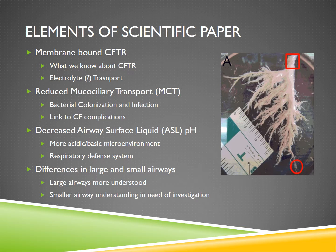The paper also discussed how defects in CFTR lead to decreased airway surface liquid pH. If the microenvironment is more acidic or basic around these lung epithelial cells, the onset of cystic fibrosis is affected. This airway surface liquid is essential for our respiratory defense system, and there are key differences in the large and small airways. The large airways are more understood and more commonly studied, while the smaller airways are in need of further investigation, which is where this paper came from.